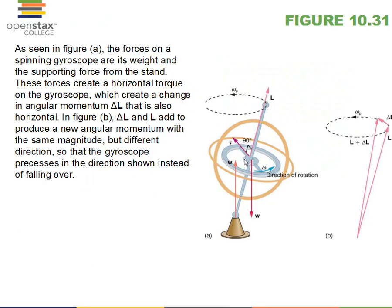Gyroscopes — a toy spinning top. You might have spun them up and noticed that as the rate of spin decreases due to friction causing omega to get smaller, there's a noticeable wobble of the gyroscope. That's called precession. The torque causes a sideways addition — delta L, a change to the angular momentum — and the top moves around in a wobbling kind of circle.